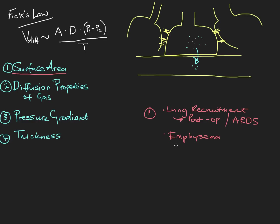So emphysema causes destruction of lung tissue, decreased parenchyma, which causes a decreased surface area available for gas exchange. Let's move on to give a quick example of the next factor: the diffusion properties of the gas.